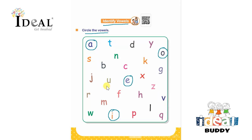Ask them: did we miss out on any? Yes — tell them that we missed out on encircling U as a vowel. There are five vowels in the given box. They have to identify the vowels and circle them by reading all the letters. Thank you.